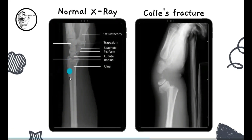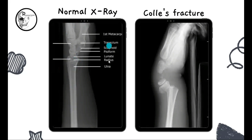And even the bone — if you observe the margins, they are very clean and there is no discontinuity in the margin of the bone. And this is the lower end of radius. So this is the normal X-ray.